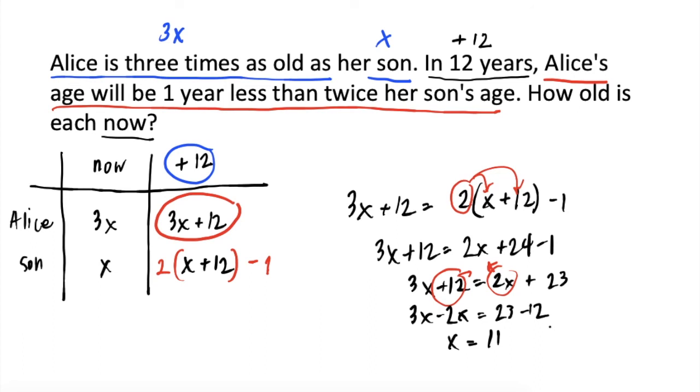To get Alice's present age, imumultiply natin ito by 3. So, our final answer is, Alice's age is 33 while her son's age is 11.